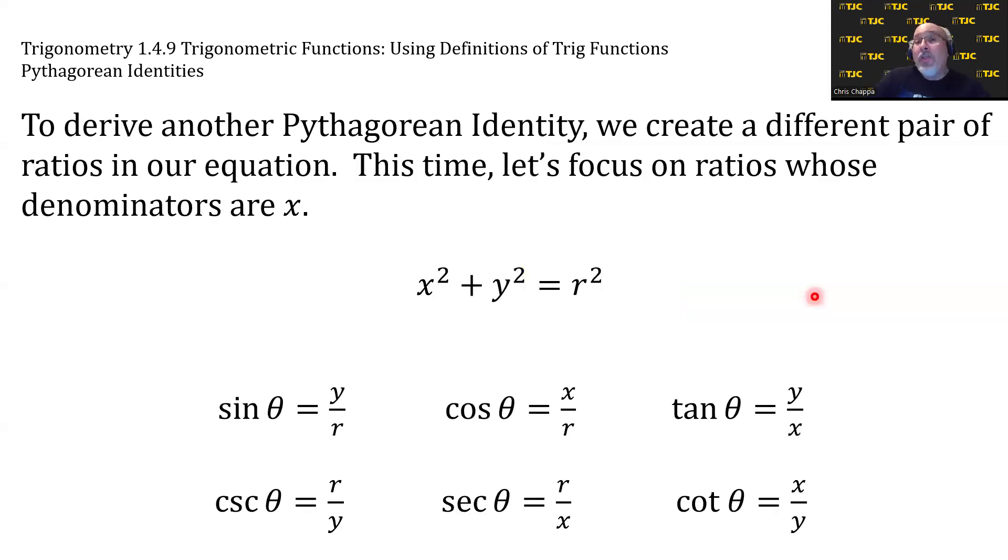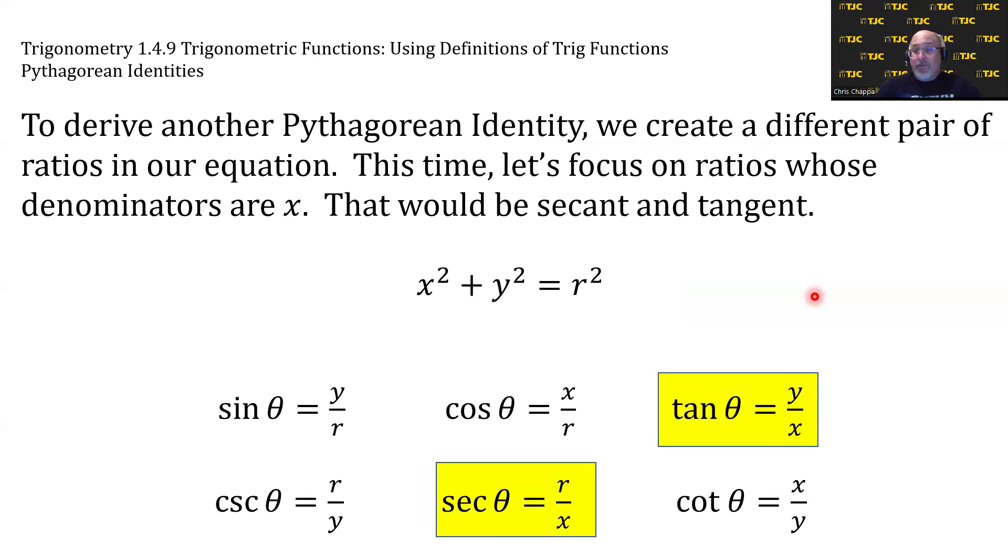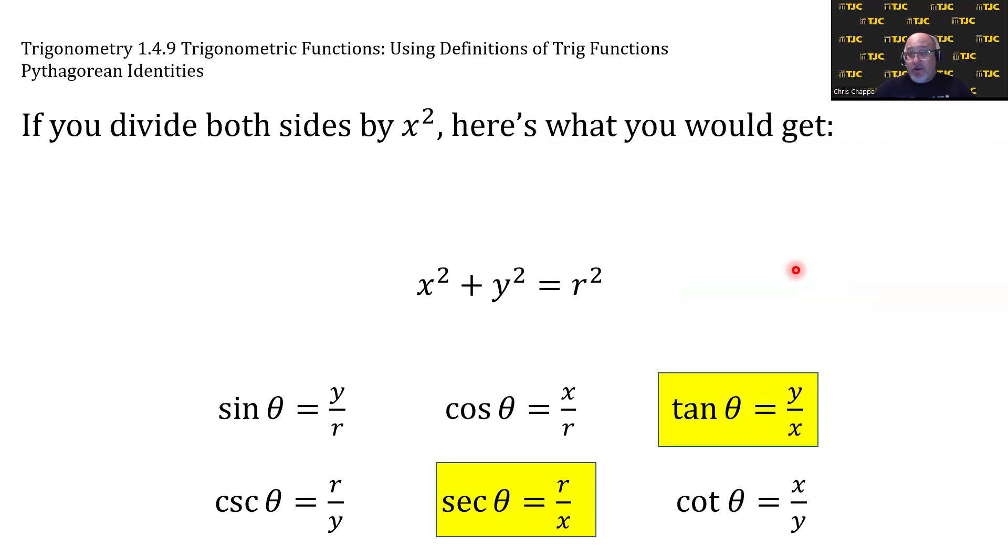Now, to derive another Pythagorean identity, we create a different pair of ratios in our equation. This time, let's focus on ratios whose denominators are x. And which trig functions are those? That would be secant and tangent. Both have denominators of x. We can get the x in the denominator by dividing both sides of the equation by x².